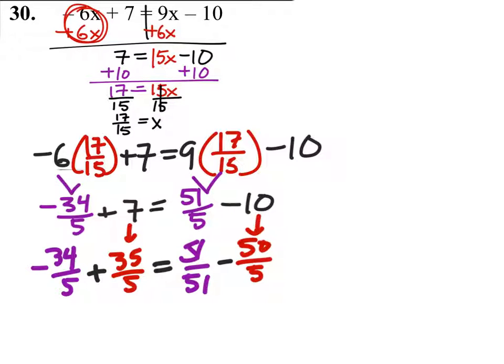Now combining like terms, negative 34 fifths plus 35 fifths is 1 fifth. And this should be equals to 51, oh, that's a fifth, not a 51 right there. Sorry about that. 51 fifths minus 50 fifths. That would give us another 1 fifth.